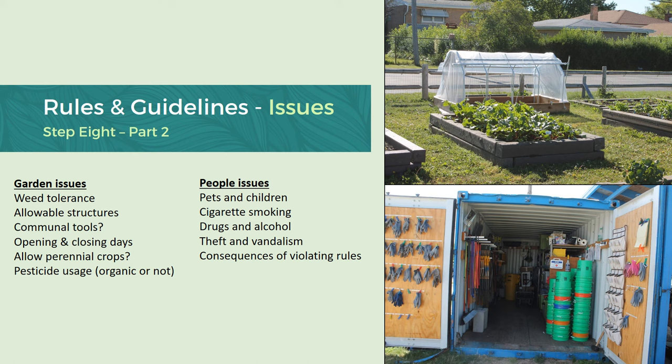People issues: things that might come up are pets on site or children running around, so have guidelines in place — you'll always want children accompanied by an adult. You'll see some theft and vandalism in these gardens from time to time, so what's the plan if that happens? If a bed is destroyed and people rented it from you, how will they be reimbursed? Consider cigarette, drug, and alcohol use — how will those be handled and what are the consequences of violating those rules?